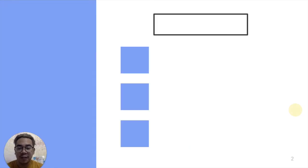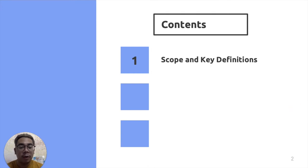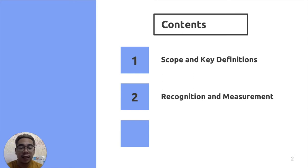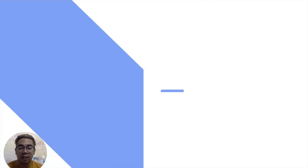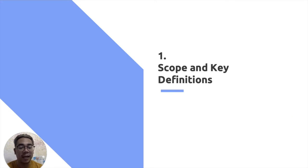For this video, we will be talking about three things. Number one, we will talk about the scope of PAS 41 and some key definitions in PAS 41. We will also talk about recognition and measurement of assets that are in accordance with PAS 41. And number three, we will be talking about the presentation and disclosure of these items. We will start our discussion with the scope and some key definitions in PAS 41.